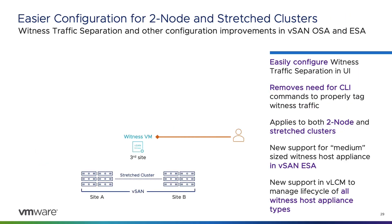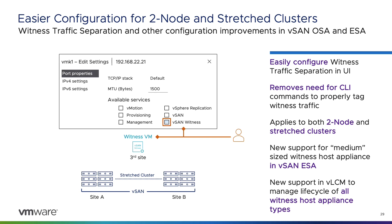vSAN 8 Update 2 makes configuration of stretched clusters and two-node topologies easier than ever. Customers now have the ability to tag vSAN witness traffic in the witness host appliance through the VMkernel configuration settings for the virtual appliance, removing the extra steps needed to perform this tagging through the command line. We've also improved the witness host appliance sizes available in the vSAN Express Storage Architecture. In addition to the large-sized witness host appliance, customers can also choose a medium-sized witness host appliance, which consumes two virtual CPUs and 16 GB of RAM and supports 500 VMs.